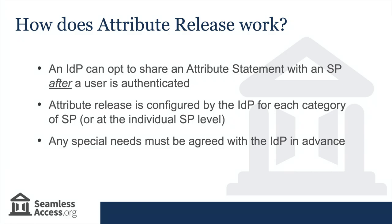Attribute release only happens after a user is authenticated. A service provider can't pull attributes — they only receive what the identity provider chooses to send. Attribute release is configured by the identity provider for each category of service provider. Library resource access is only one of a number of valuable use cases for federated authentication.